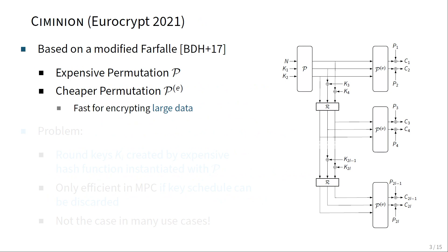Let's look at the Syminian symmetric cipher, published two years ago at Eurocrypt. Syminian is based on a modified version of the Farfalle design strategy and is characterized by two different permutations. You have a more expensive permutation applied to the input of the cipher, and its output is fed into significantly cheaper permutations called PE, which produce a key stream used to encrypt the plaintext. Since we only apply the expensive permutation once and use its output in cheaper permutations for key stream generation, the more data we encrypt in MPC, the more efficient Syminian gets — the cost is amortized over a large amount of encrypted data.